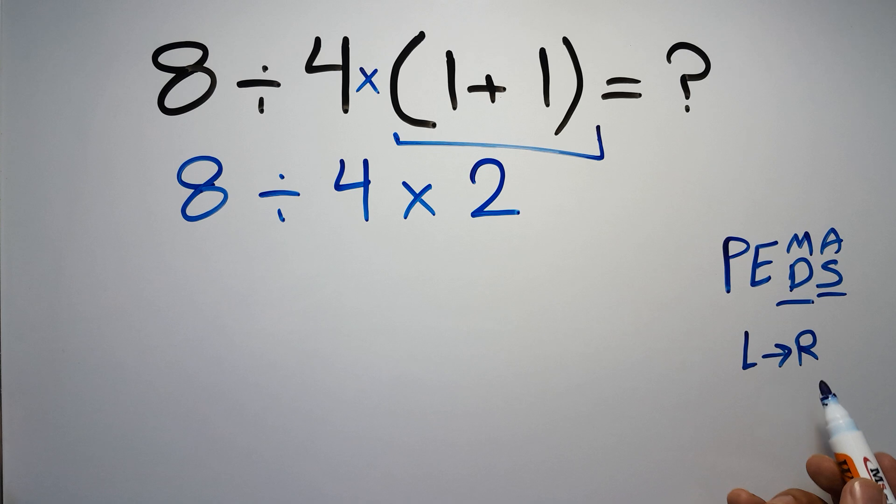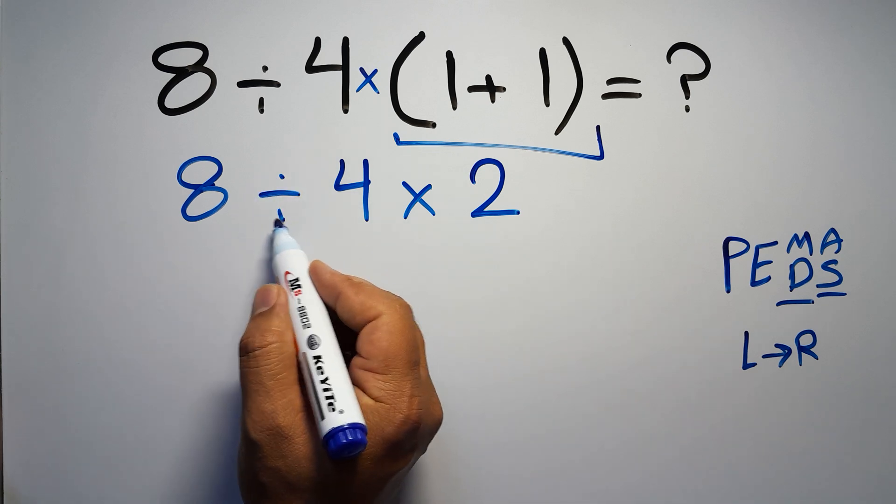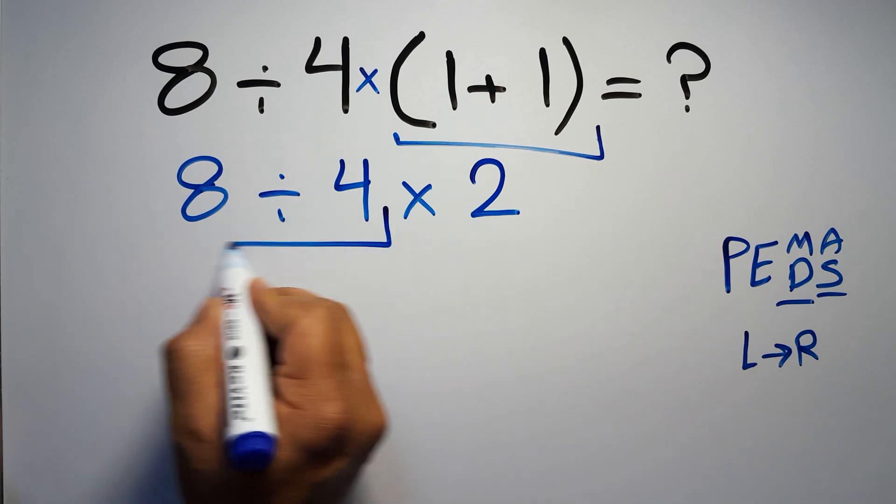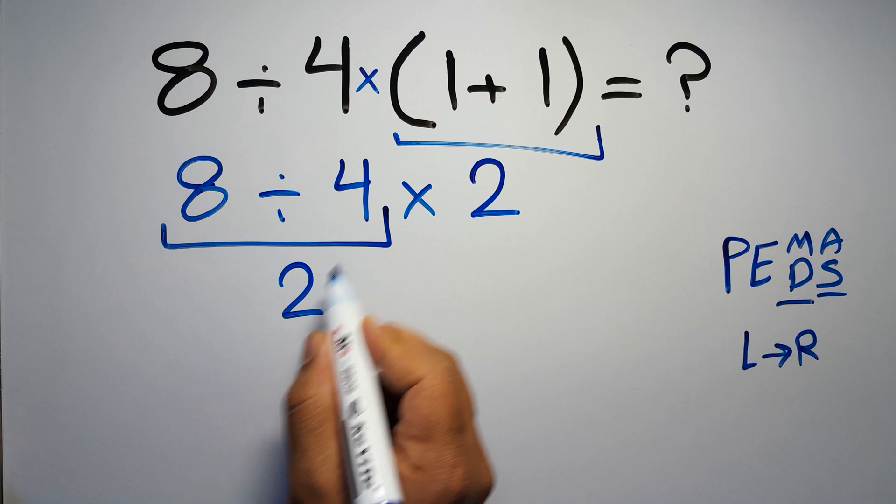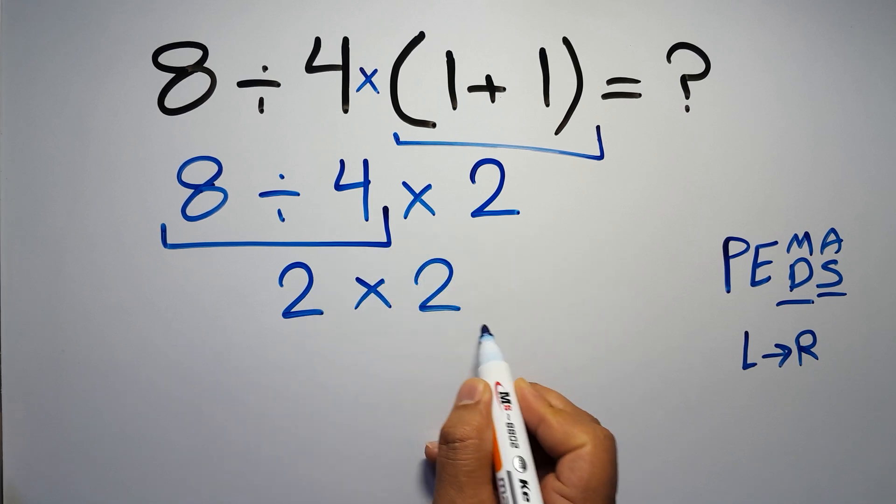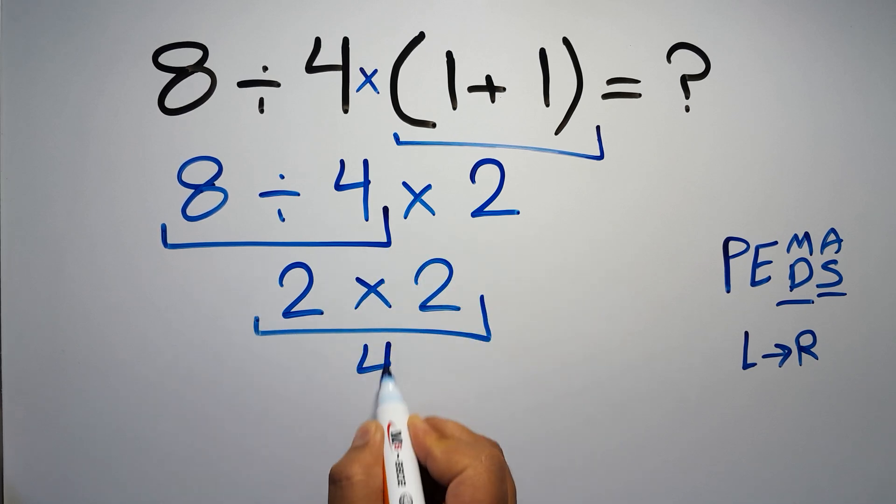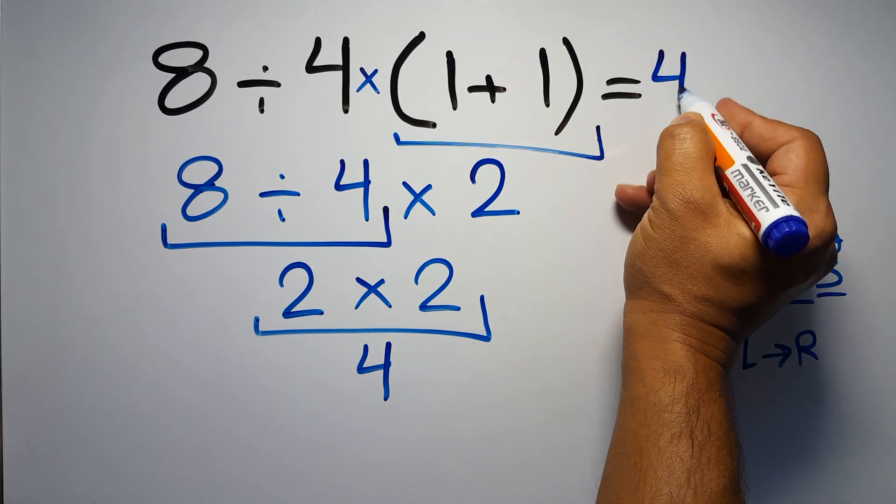So here first we have to do this division. 8 divided by 4 gives us 2, so 2 times 2, which equals 4. And this is our final answer to this problem. The correct answer is 4.